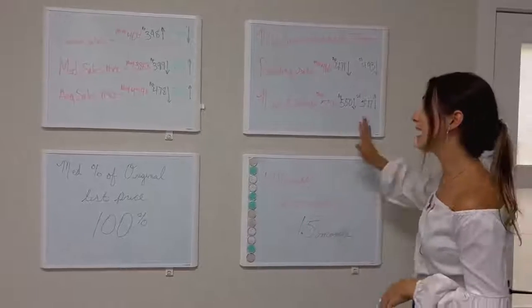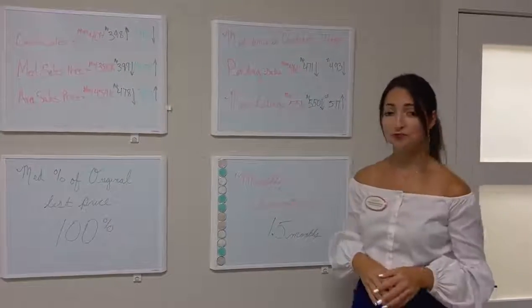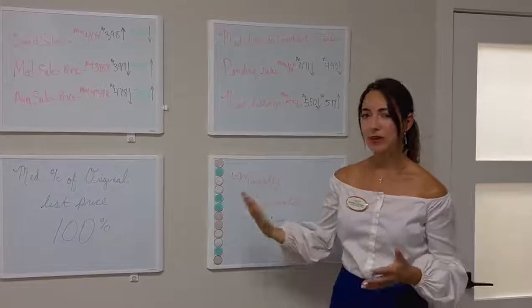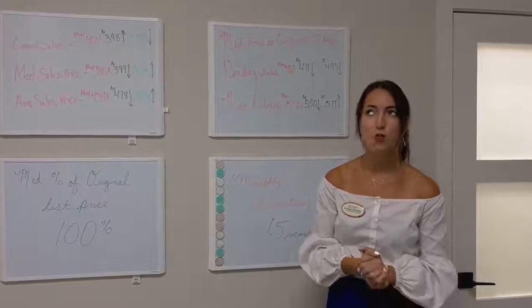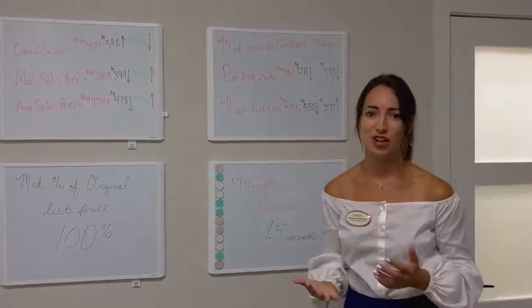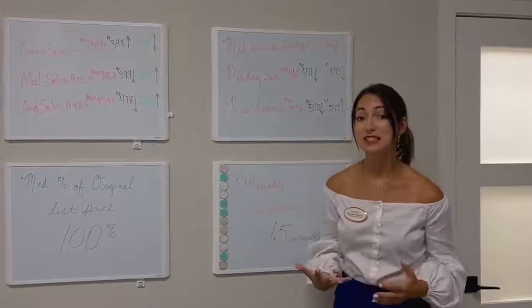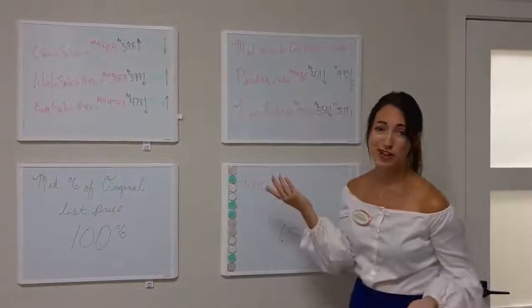All right, moving on to our next board here. I have median time to contract. This number right here is seven days. I didn't do a comparison on that. I just did for the month of May. It's the exact same in April, and I want to say it was the exact same this time last year. Hasn't changed a whole lot. Your house still should not sit very long. If you list it correctly, it's an average of seven days.